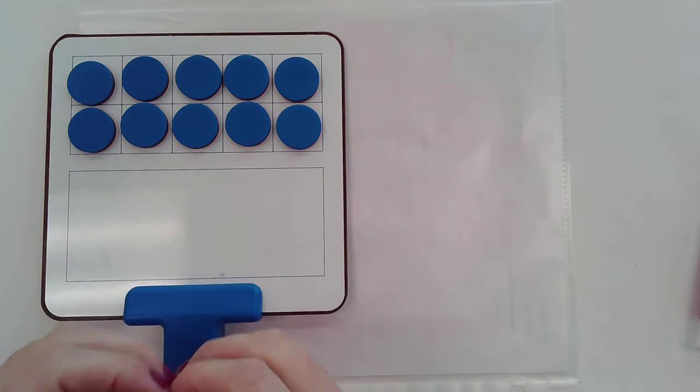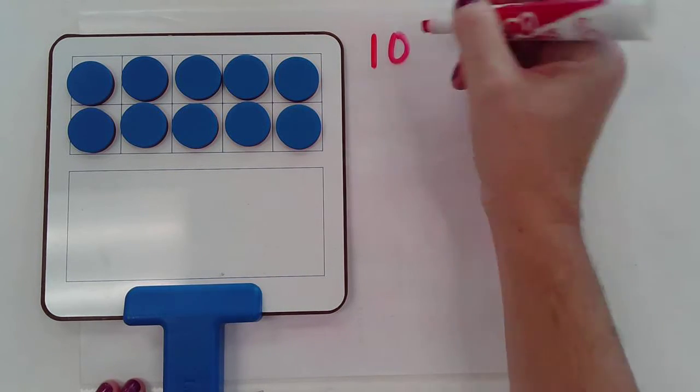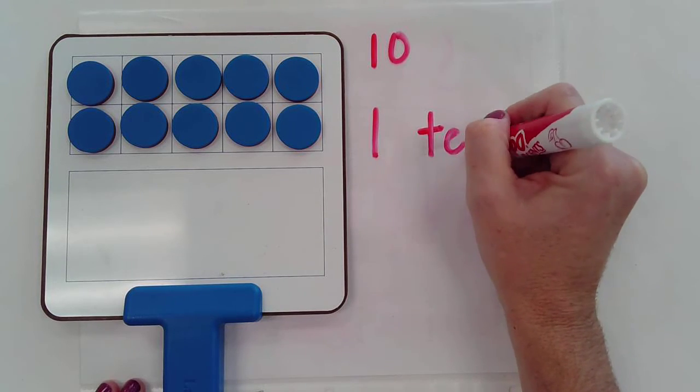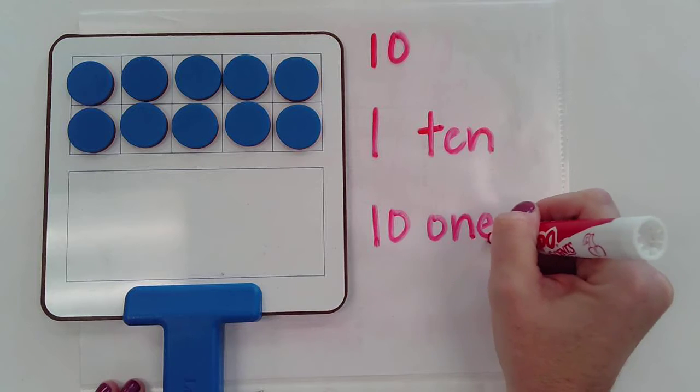So we have a ten frame filled with ten counters. So I know that there are ten counters, or there are one ten, or there are ten ones.